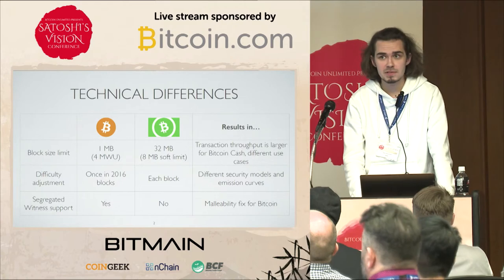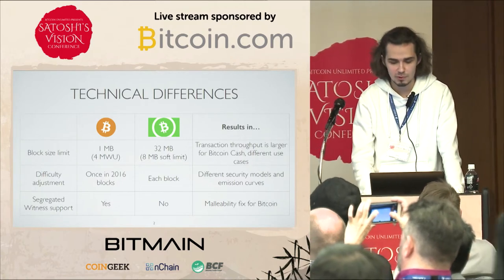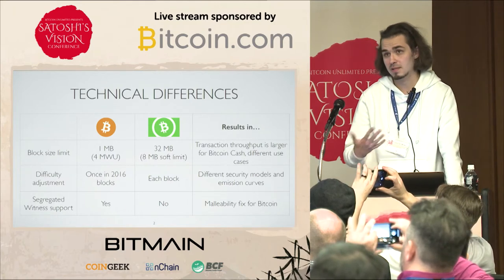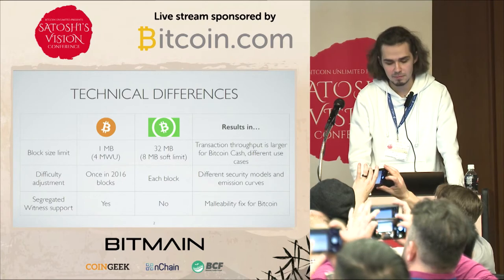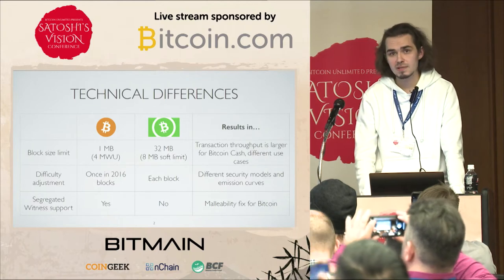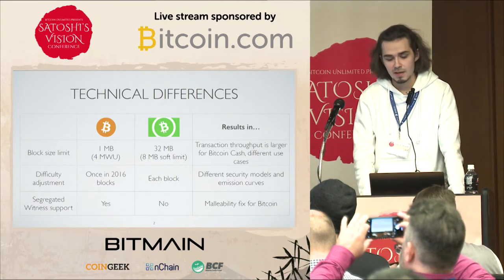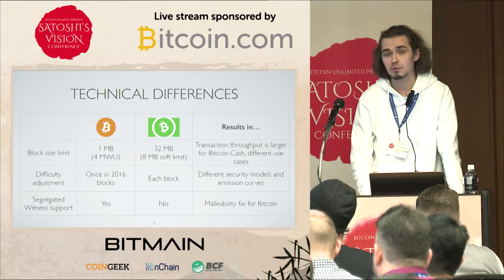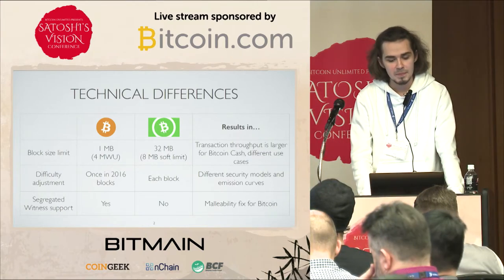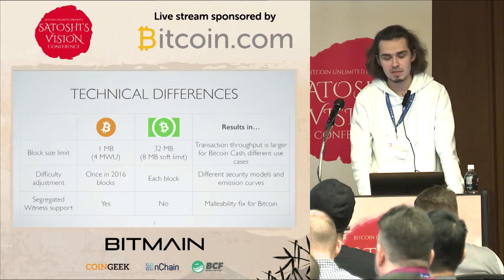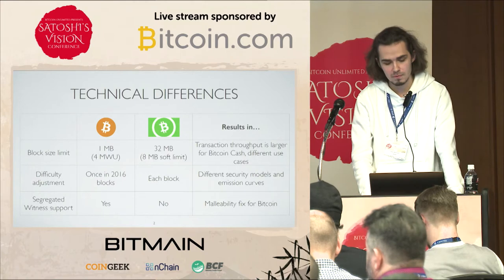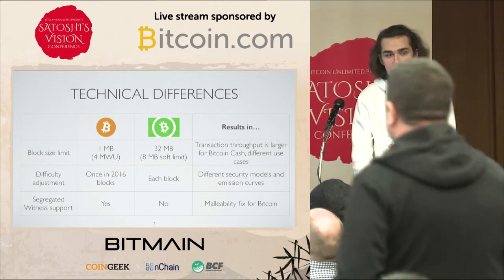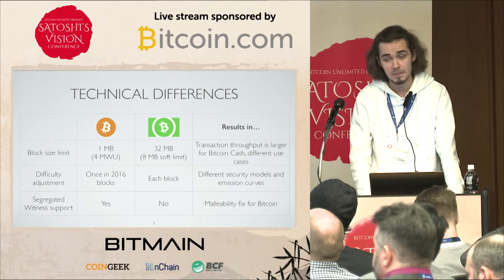Let's start with the technical differences — what influences the stats the most. The most known and important difference is the block size limit, which is the reason Bitcoin Cash was born. In Bitcoin we still have a one megabyte block size limit. Since SegWit got activated they changed the concept to block weight, with a limit of four megaweight units, but effectively the block size in Bitcoin is still limited to about 1.2 or 1.3 megabytes. In Bitcoin Cash this limit is 32 megabytes, right now soft-limited to 8 megabytes, and as Omri said it will be lifted in the next update.